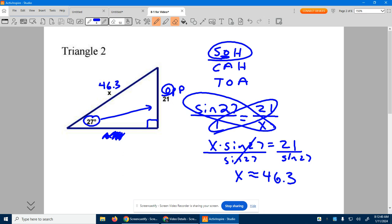And again, hypotenuse is always the longest leg. This leg across from the small angle is 21. So yeah, 46.3 seems to make sense.